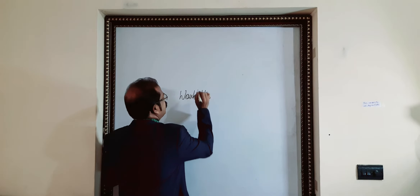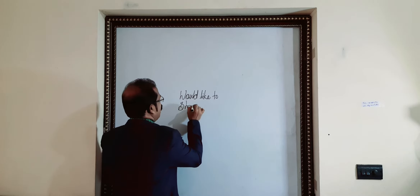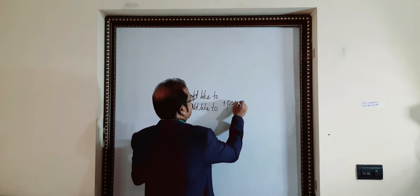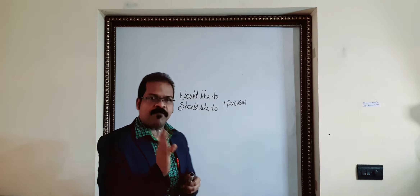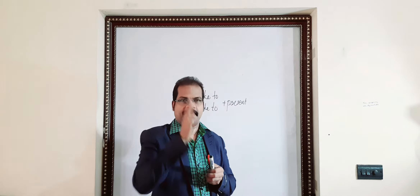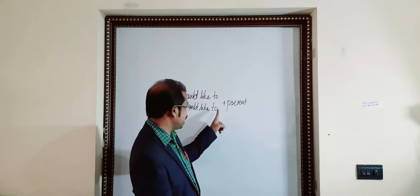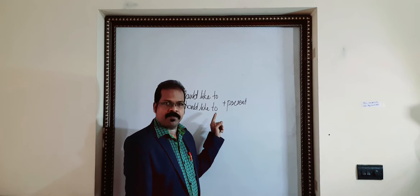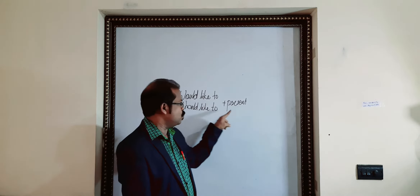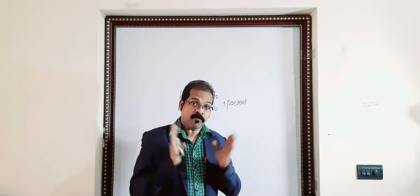The structure is: 'would like to' or 'should like to' plus the present form — that is, the first form of the verb. For example: to go, eat, drink, sleep, drive, and so on. Other forms of the verb cannot be used here because there is a 'to,' making it an infinitive. So after 'would like to' or 'should like to,' you must use the present base form of the verb. This is very essential and you should not forget it.